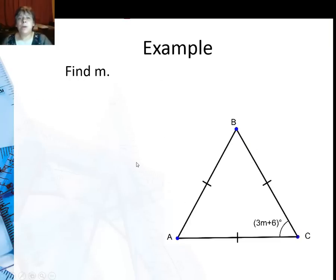So in this problem I'm going to find M. This is an equilateral triangle, all three sides are equal, which means all three angles are equal. If the angles are equal, 180 divided by 3 is 60 degrees.